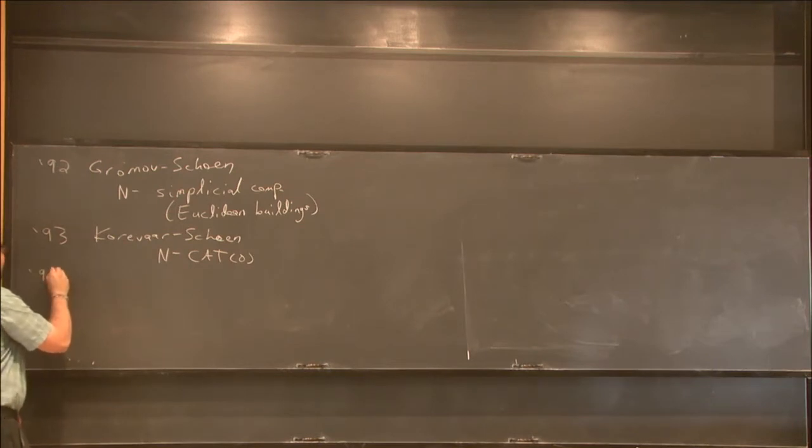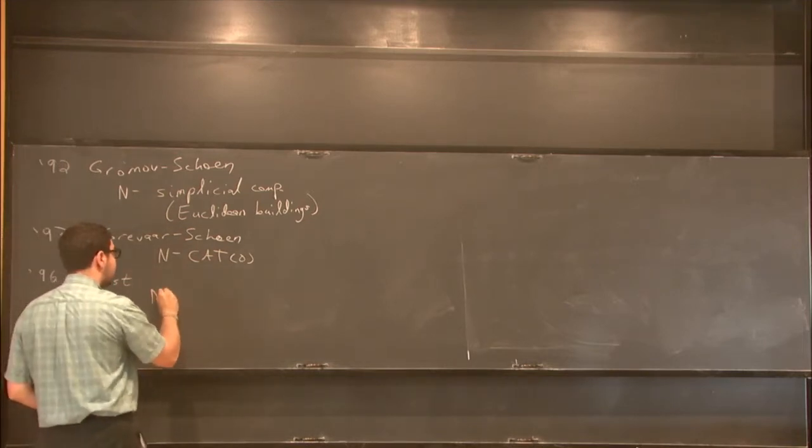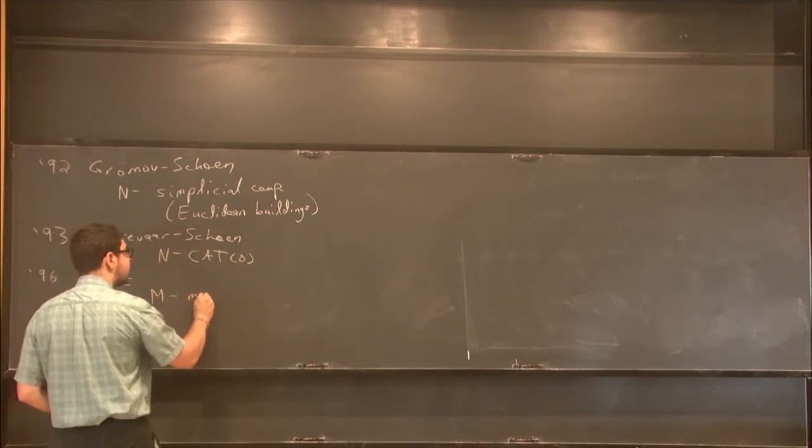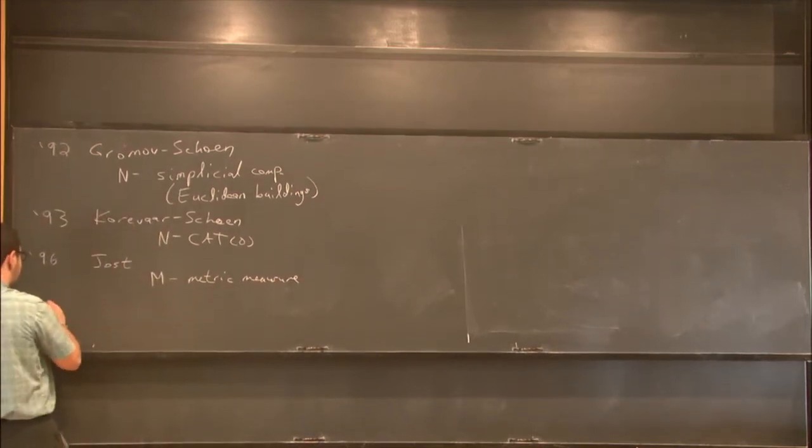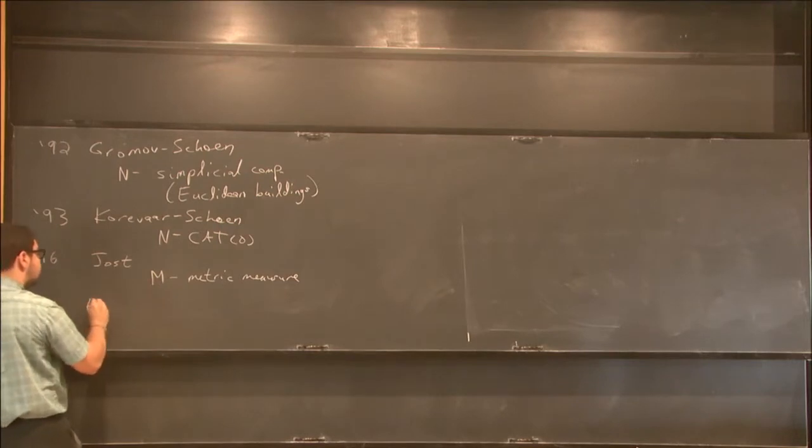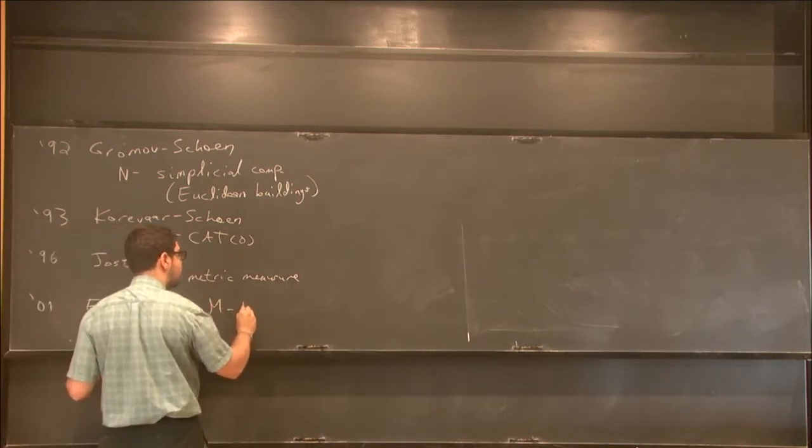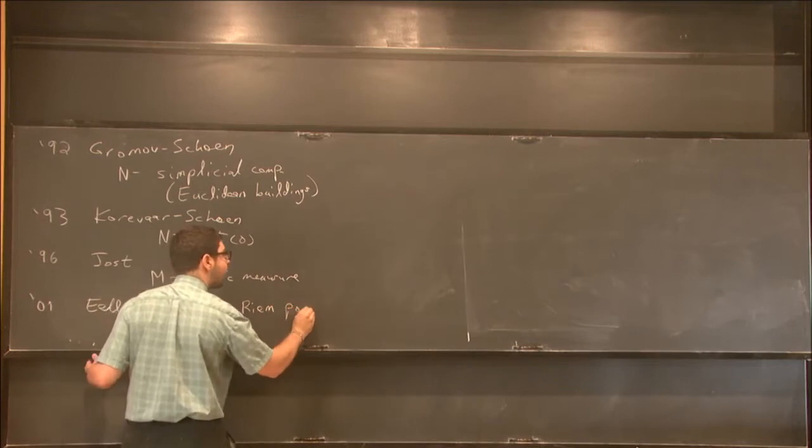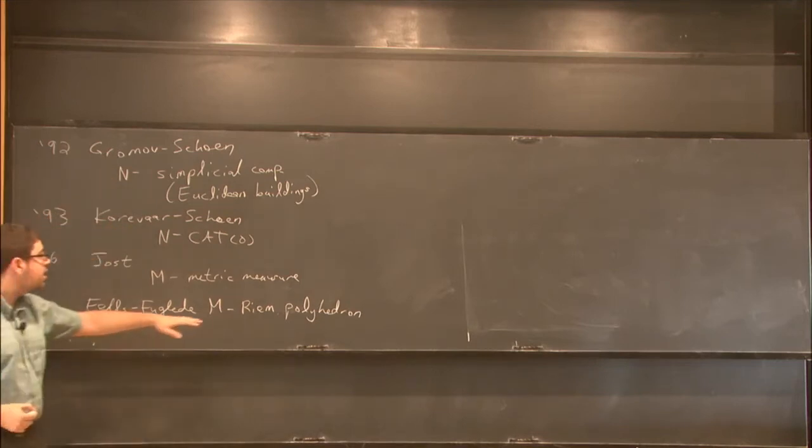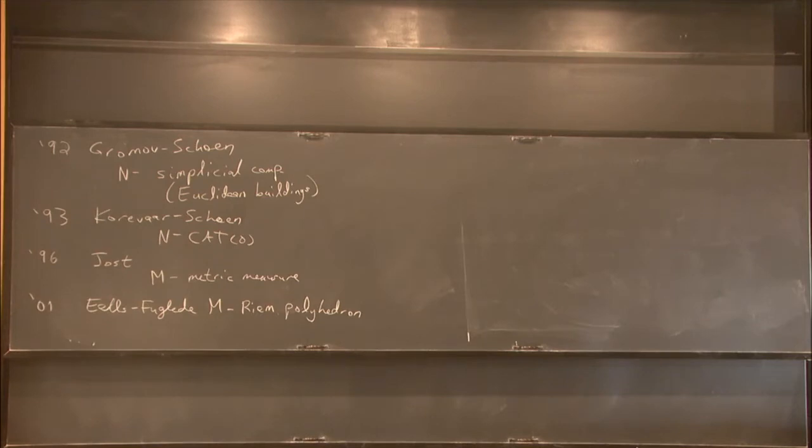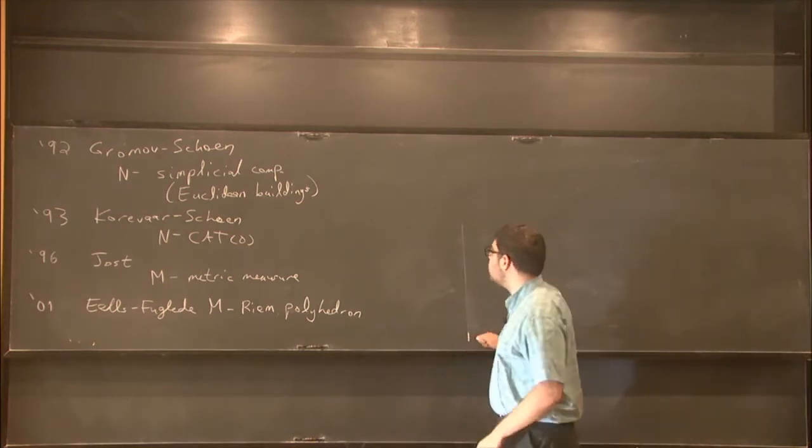Let's see, in 96, I think it was, I could be off on this date. Joost talked about M is metric measure space, very, very general. And in 01, Eels and Fugelde said M can be a Riemannian polyhedron. Sort of using both the Gromov-Shane and the Korov-Shane theory to define things when the domain has a simplicial structure. And I'd love to talk about all of these things, but unfortunately, I have finite time.